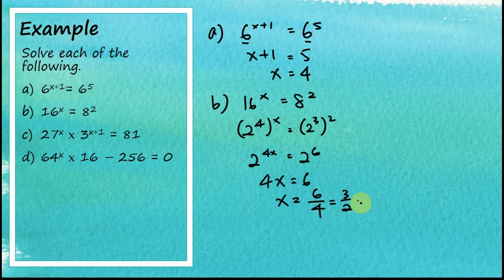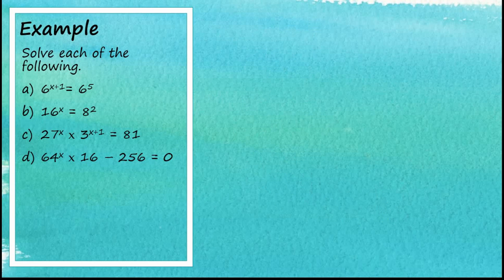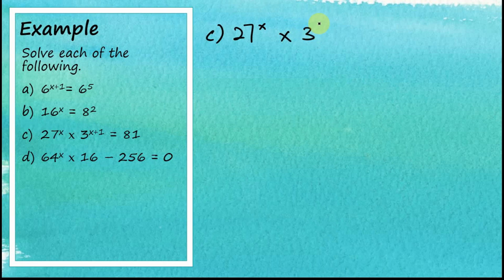Therefore x equals six over four, or three over two, which can also be written as the mixed number one and a half. Continuing with question c: 27 to the power of x times three to the power of x plus one equals 81.